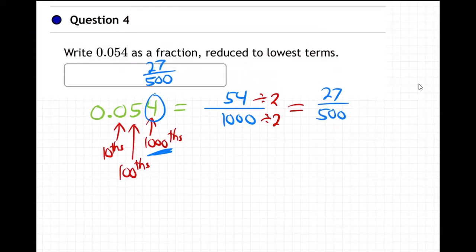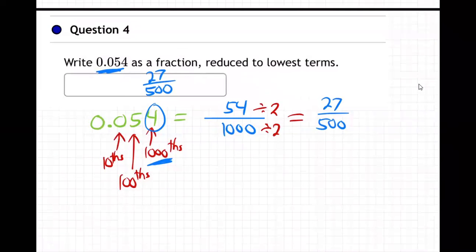And you can double check it on your calculator. You can type into your calculator, 27 divided by 500. Hit equals, and it'll change it back to the decimal, 0.054. Just like that. So there we go.